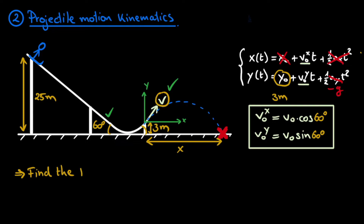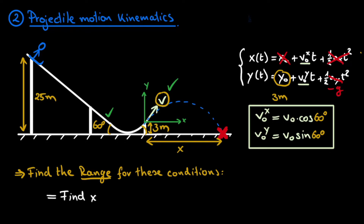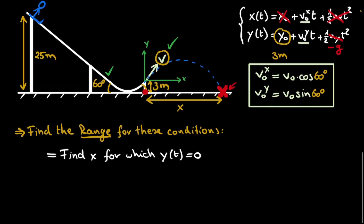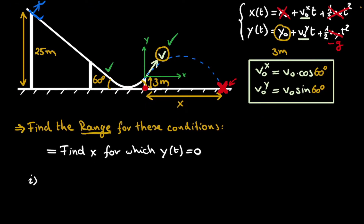Now that we have integrated all pieces of information into our kinematic equations, we can rephrase the question. Given these conditions, we need to find the range of this projectile motion — specifically, the x for which y of t equals zero, because y of t equal to zero means we've reached the ground. For this specific y we need to find x, which will be the solution to our problem. We can use the first kinematics equation to find x: x after time t equals the initial velocity in x multiplied by t, describing uniform motion.